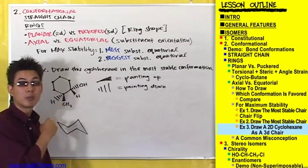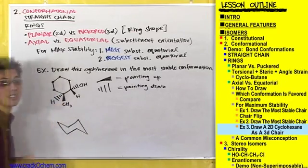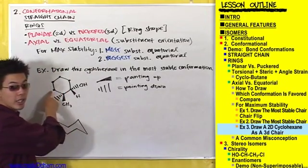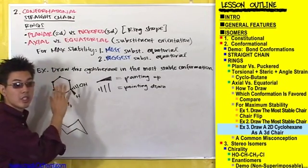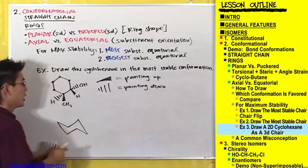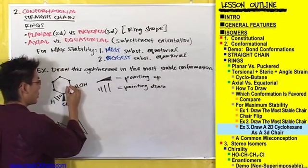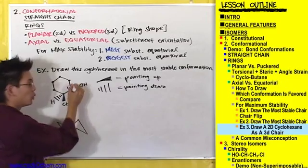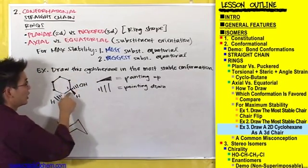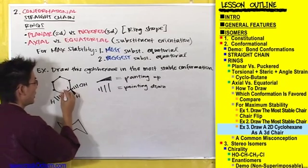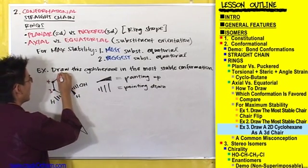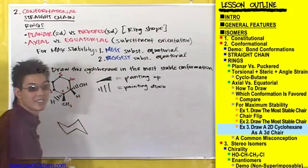Let's label our 2D conformation first. You can start numbering from whichever carbon you want on this ring. I'm going to start from the carbon that has the OH on it arbitrarily and work my way clockwise — it does not matter if you go clockwise or counterclockwise. So carbon number one, two, three, four, five, and six.